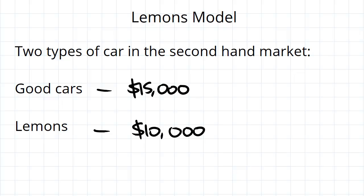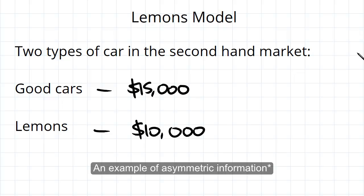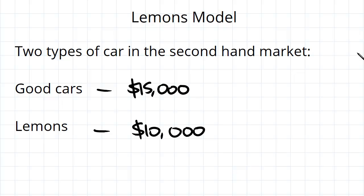So we've got these two types of cars and in the last video we mentioned that an example of adverse selection is when the seller has good knowledge of the quality of a good they're selling and the buyer does not. This is the case in the secondhand car market.